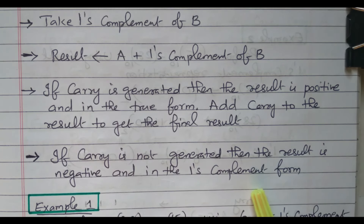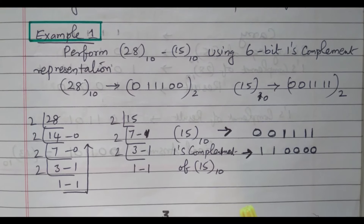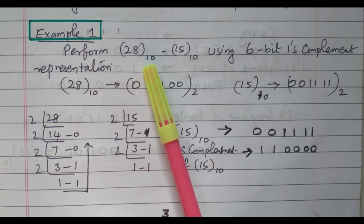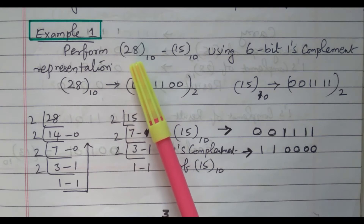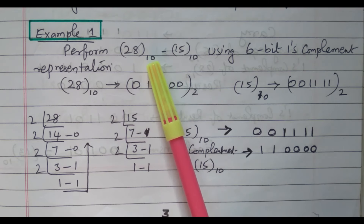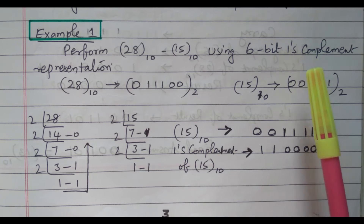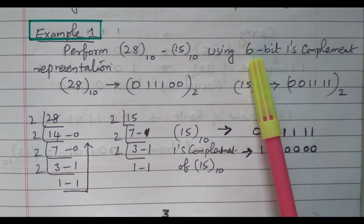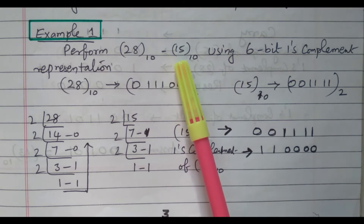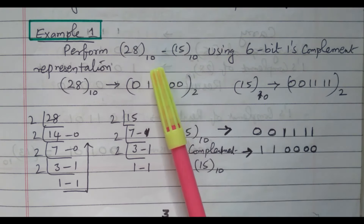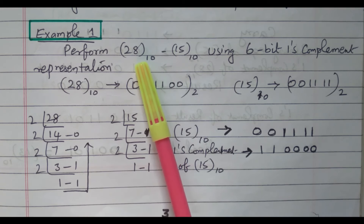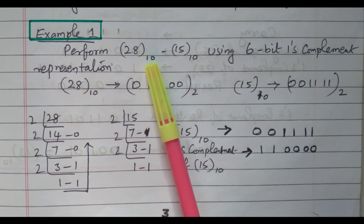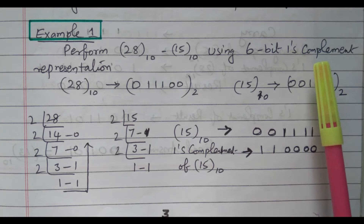Now we will go to Example 1. Perform 28 decimal minus 15 decimal using 6-bit one's complement representation. We need to subtract 28 minus 15. First we need to convert into binary form, then perform using the one's complement method with 6 bits. By seeing these numbers, we can understand the answer will be positive because the first number is bigger and the second number is lower, so the answer will definitely be positive 13. We will verify this using one's complement.